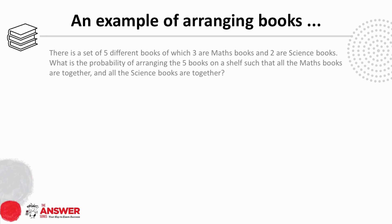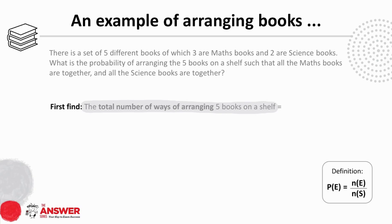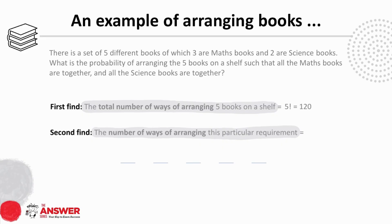Let's look at an example of arranging books on a shelf. There are five different books, of which three are maths and two are science. We are asked what the probability is of arranging them such that all the maths books are together and all the science books are together. Because of the definition of probability, we have a three-step process. First, the number of ways in total of arranging five books on a shelf is five factorial. Then we create five slots to represent the position of each book and group the three maths books together, putting them first for now.